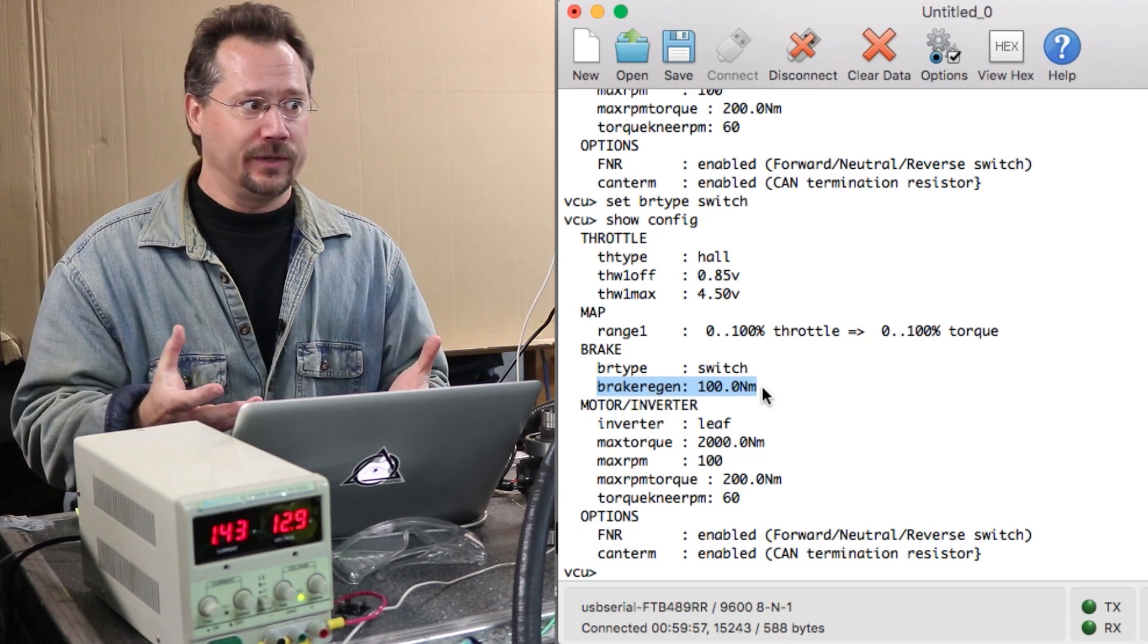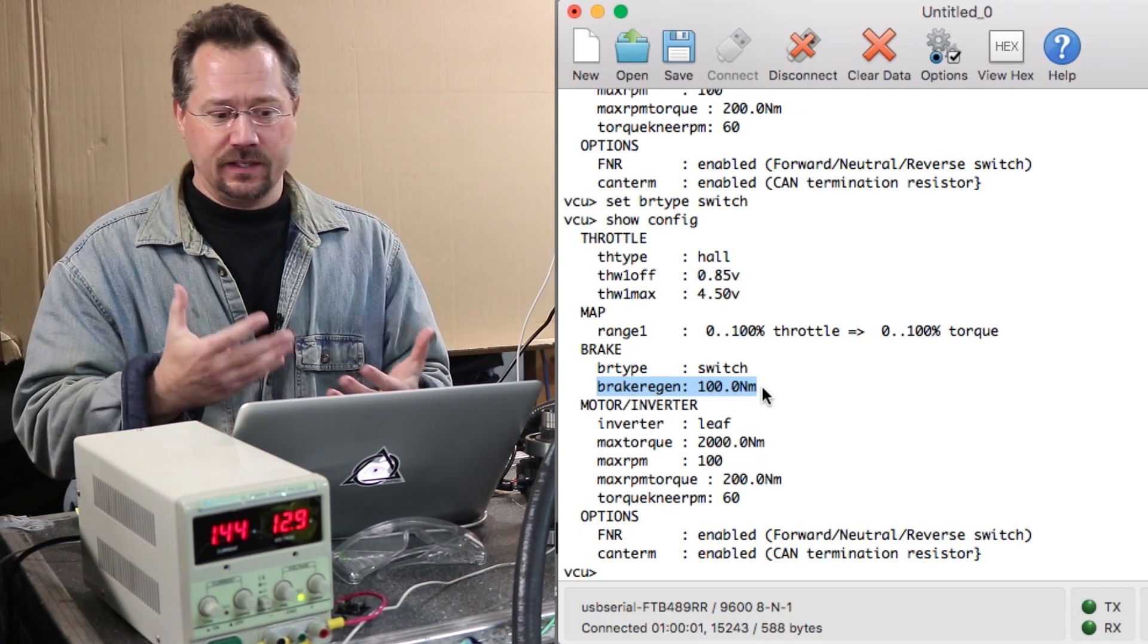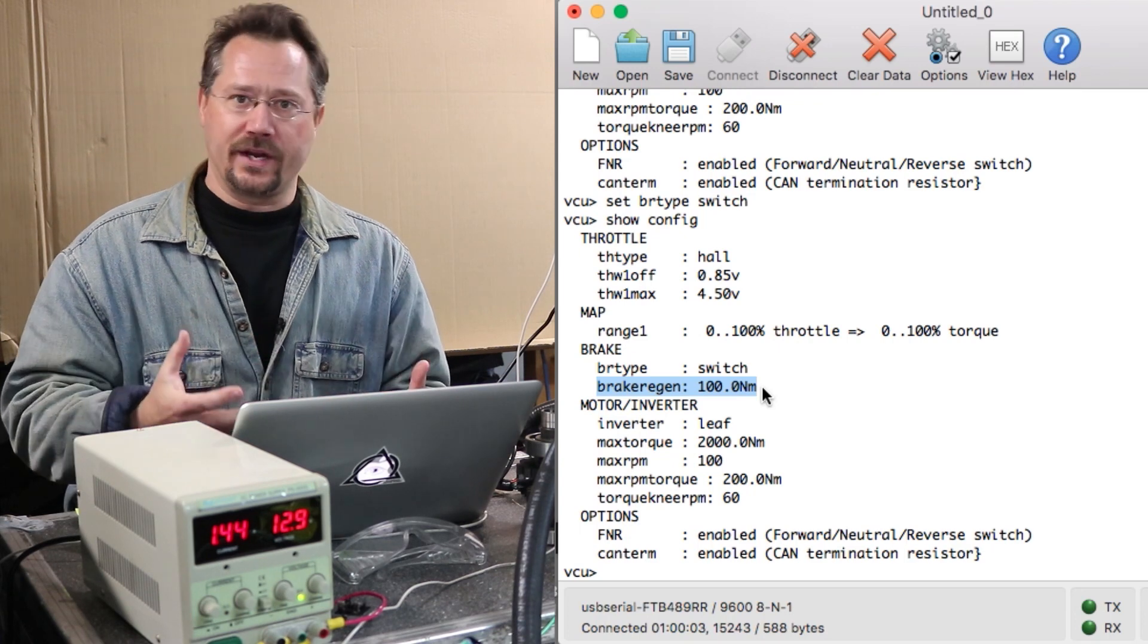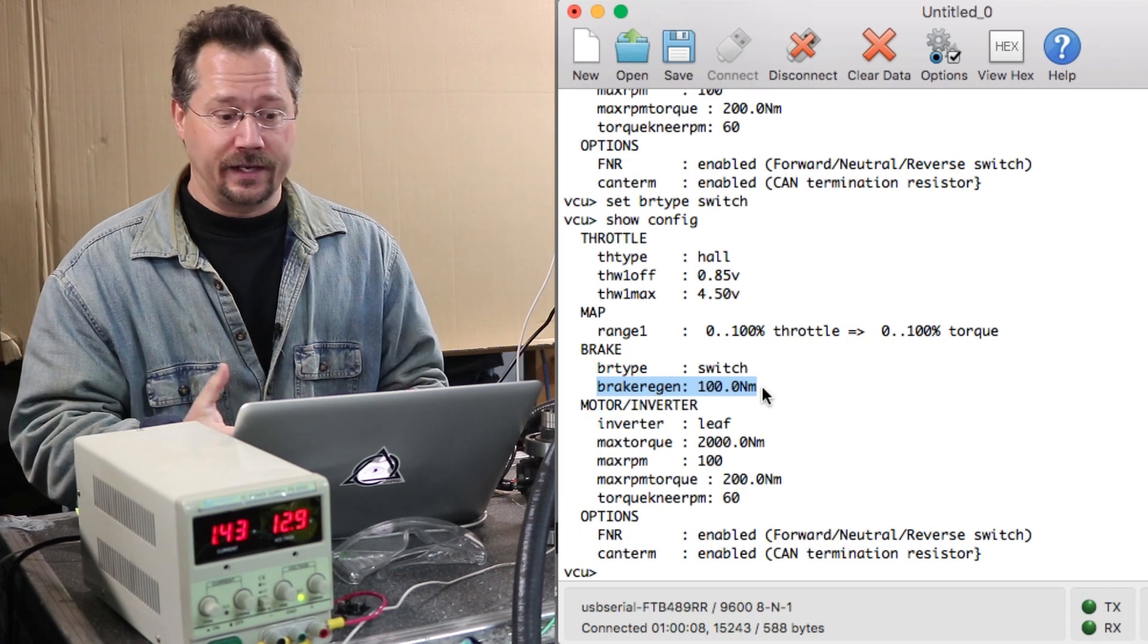Right below it we see brake regen 100 newton meters, we can change that. So if we were going to put this into a car maybe we would set all this up, go for a drive around the block and feel how we like that brake regen with just that switch and if it's not what we want we could adjust it with that brake regen number right here.